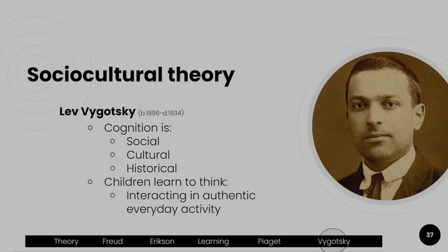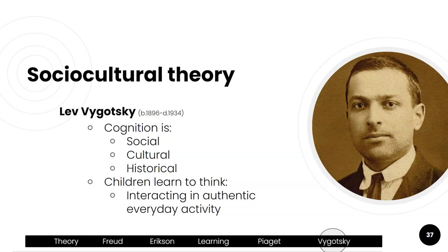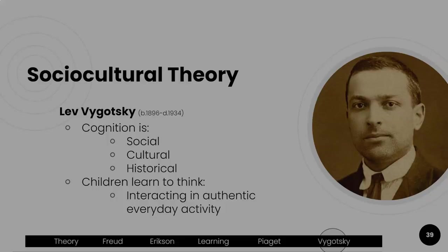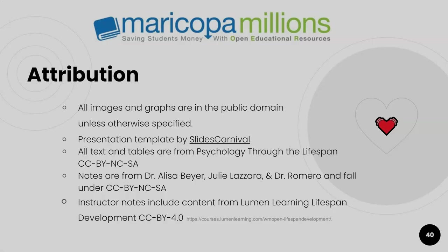The last theorist is Lev Vygotsky. He believed cognition is formed through our social, cultural, and historical interaction with others. Children learn to think by interacting in authentic everyday activity. For Vygotsky, cognitive development was much more social than what Piaget had given us, and we'll look at this a little bit more in depth. That is it for this chapter — we will explore each of these theorists much more in depth as we go along. This has been just a quick introduction into some of the major theorists.